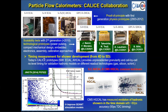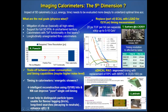Current CALICE prototypes provide unprecedented granularity and cell-by-cell nanosecond timing information for validation of hadronic models across different readout technologies, which allows improvement of GEANT4 simulation. Recently, there was a combined test beam with the analog HCAL and the CMS HGCAL, allowing measurements of the evolution of hadronic showers in the time domain with precision below 100 picoseconds.